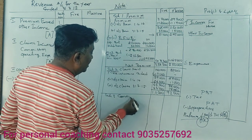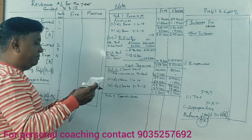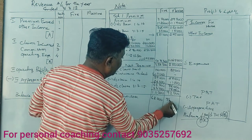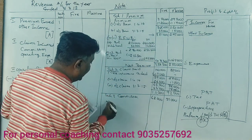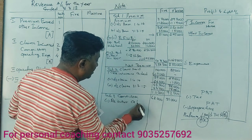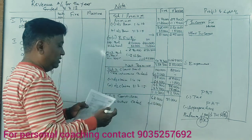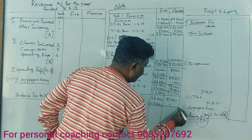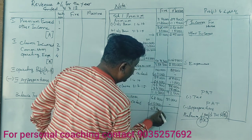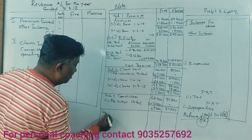Schedule Number 3 — Commission from direct business: fire is ₹62,000 and marine is ₹51,000. Commission on reinsurance ceded is ₹12,000 and ₹13,000. Net commission: ₹49,000 for fire and ₹51,000 for marine.